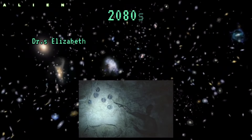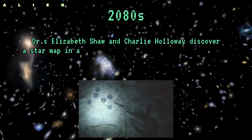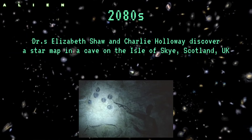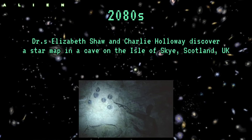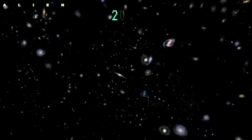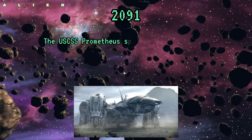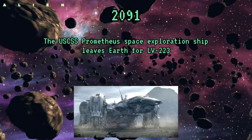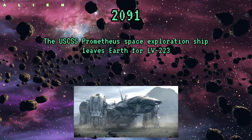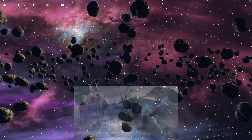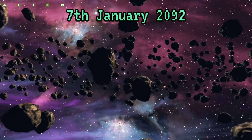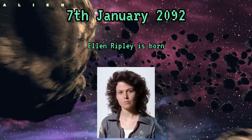2080s: Doctors Elizabeth Shaw and Charlie Holloway discover a star map in a cave on the Isle of Skye, Scotland, UK. 2091: The USCSS Prometheus space exploration ship leaves Earth for LV-223. The 7th of January 2092: Ellen Ripley is born.